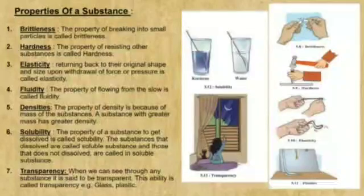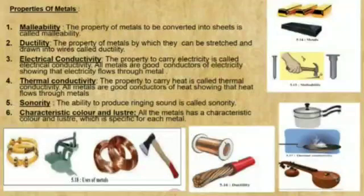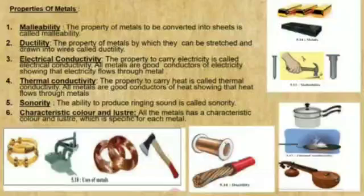Glass, some types of plastic, clean water, and air are transparent substances. Now let's know about properties of metal. What is metal? Substances like copper, gold, iron, and aluminium are called metal. Metals are found in the form of minerals deep inside the earth. Minerals from the earth's crust are processed to obtain the metal. Even in daily life, metals have various importance. So let's know about the common properties of metal.